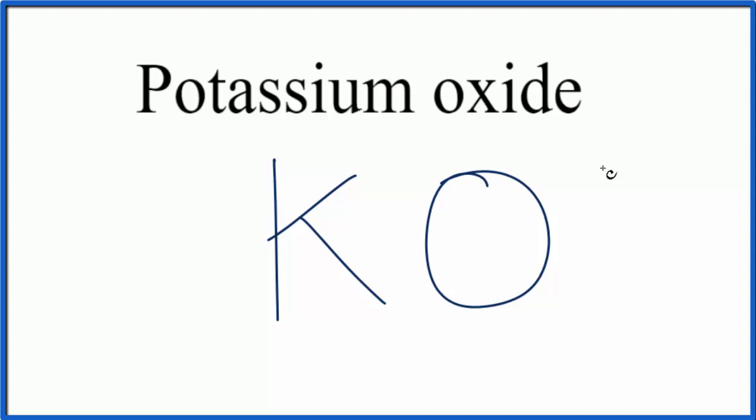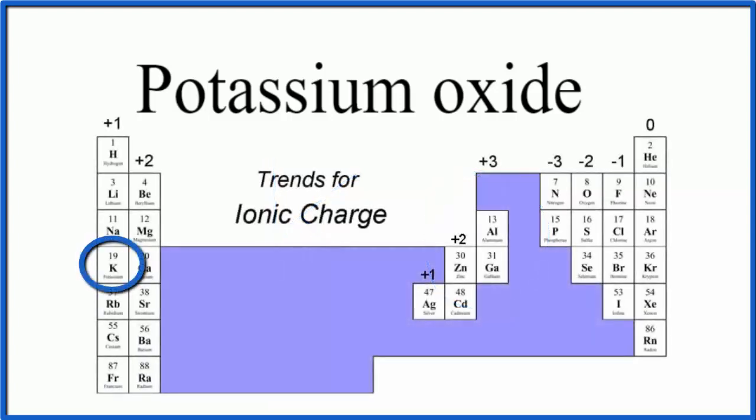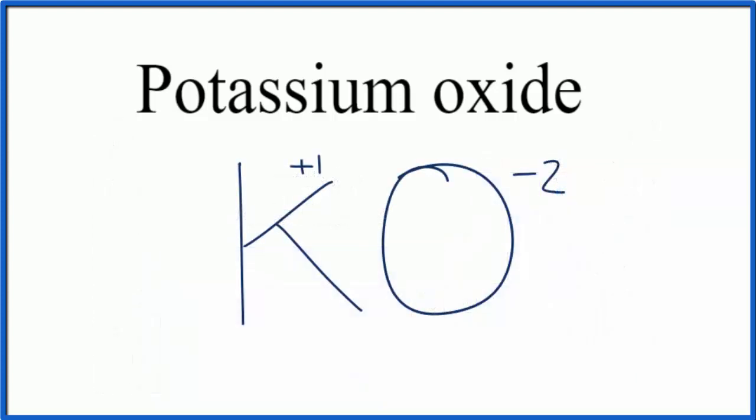And with ionic compounds, we need to balance the charges. So we look at the periodic table, and we see that potassium has a plus one charge, and oxygen has a minus two. That means the net charge is not zero. The plus one and the minus two, when we add them up, they don't equal zero.